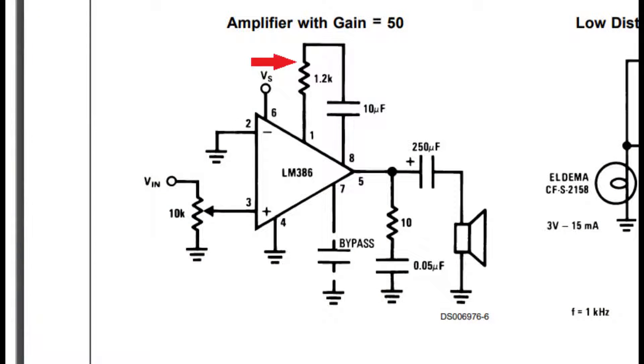The schematic on the datasheet shows that you can put a 1.2K resistor in series with the 10UF capacitor between pins 1 and 8. This will bring the gain down to 50, but the distortion should go away.